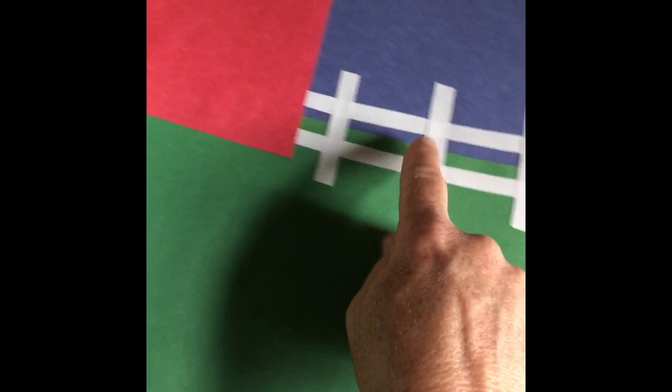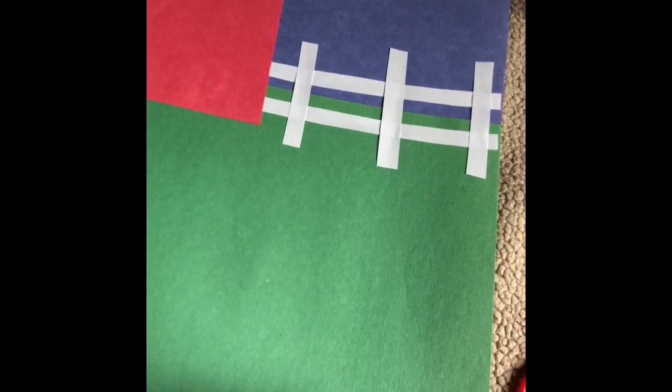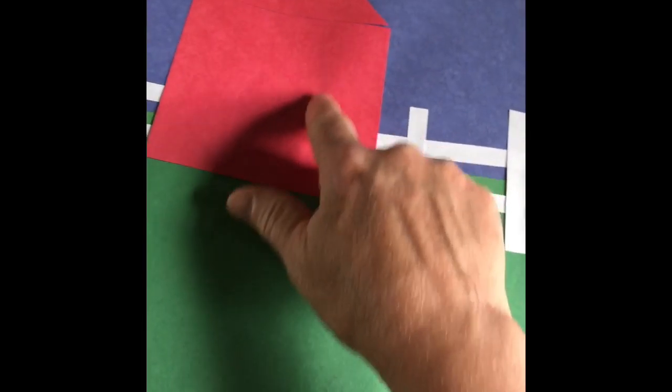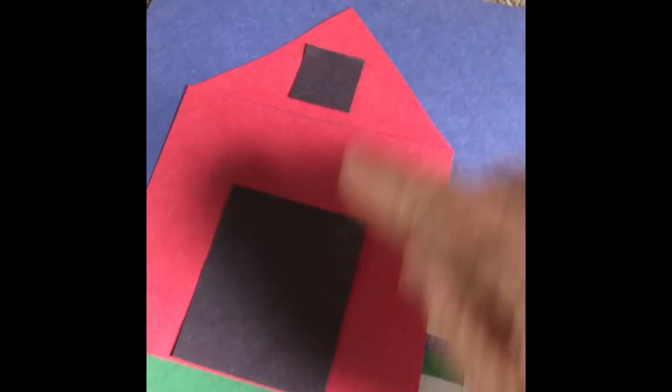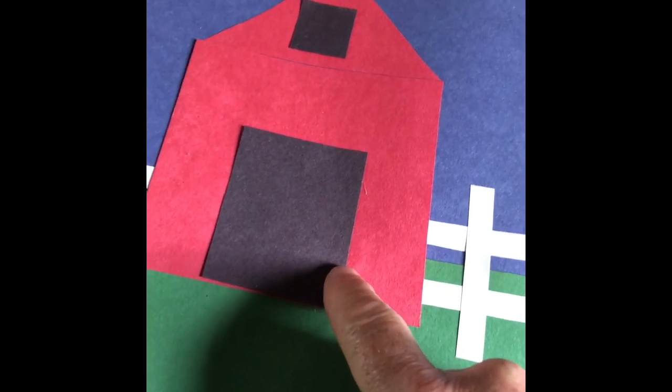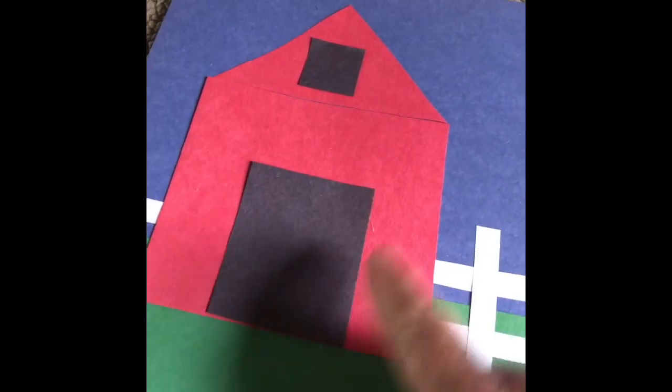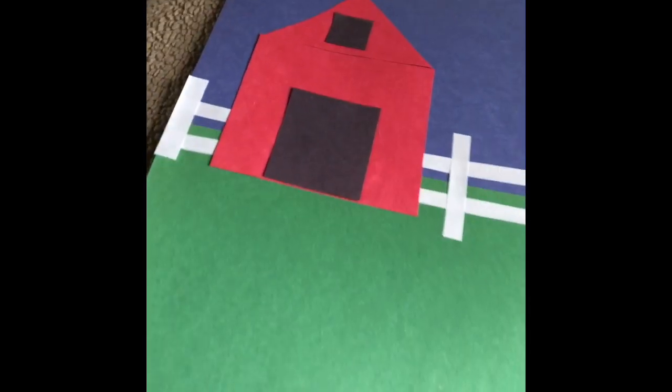All the shapes on, the barn, the fence, and now we're going to make a door for the barn and a window. I did a little square for the window and I did a rectangle for the door. Any size you choose is fine. I'm just eyeing it. I'm not even going to measure it.